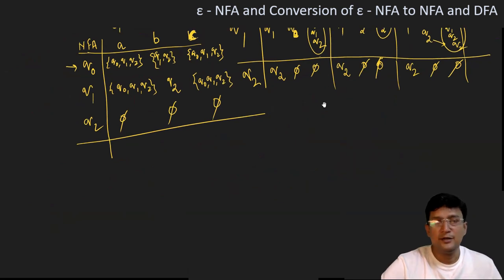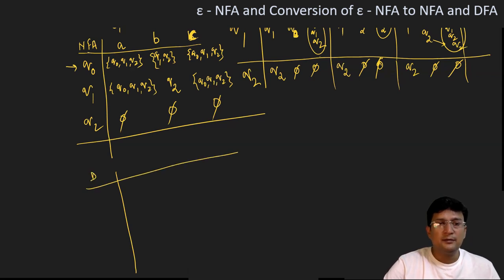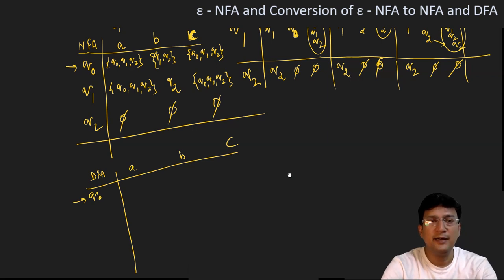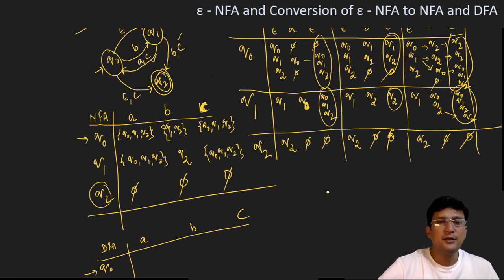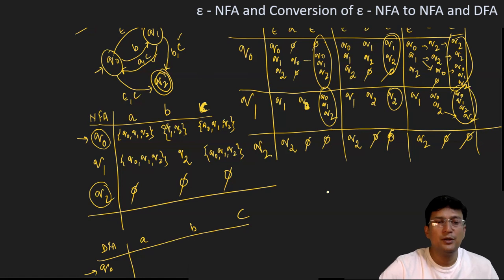Since we already have the NFA transition table, I can draw the DFA for this. Let's also decide about the final states. The final state in the given epsilon NFA was q2. Since I can reach state q2 by taking epsilon from q0, q0 is also a final state. I can reach q1 by epsilon from q0, but I cannot reach q2 from q1 by epsilon alone. So q0 and q2 are the final states of the NFA.